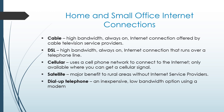Home and small office internet connections: Cable — high bandwidth, always-on internet connection offered by cable television service providers. DSL — high bandwidth, always-on internet connection that runs over a telephone line. Cellular — uses a cell phone network to connect to the internet, only available where you can get a cellular signal. Satellite — major benefit to rural areas without internet service providers. Dial-up telephone — an inexpensive, low bandwidth option using a modem.